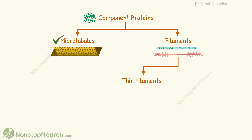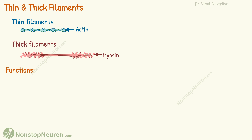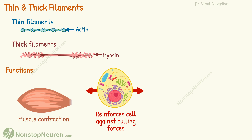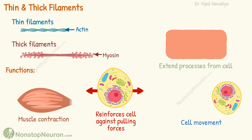Filaments can be thin filaments, thick filaments, or intermediate filaments. Thin filaments are formed of actin molecules and thick filaments are made up of myosin. These filaments play a role in muscle contraction. They also reinforce the cell against pulling forces, are responsible for cell movements like gliding and cytokinesis, and help the cell extend processes — for example, the formation of axons in neurons and microvilli in epithelial cells.